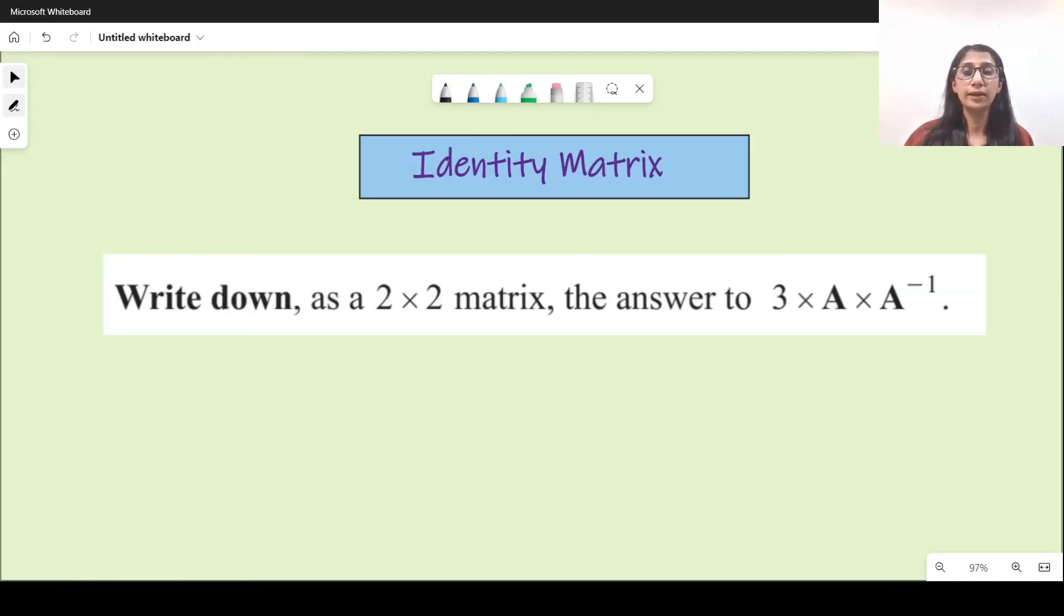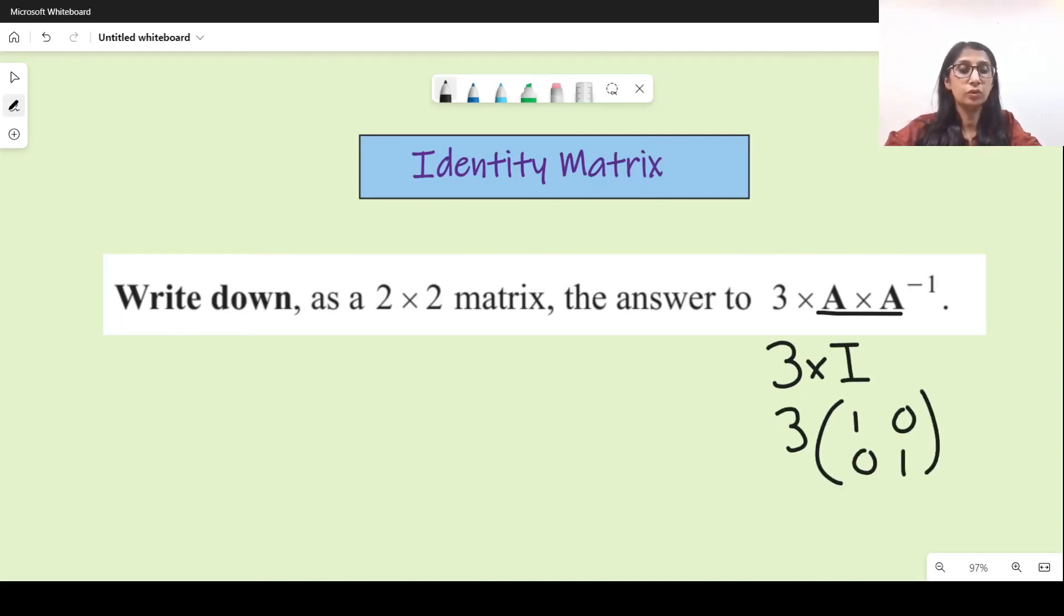Here's another one: write down as a 2 by 2 matrix the answer to 3 times A times A inverse. Again we know that this means identity matrix, so 3 times identity matrix equals to 3 0 0 3.